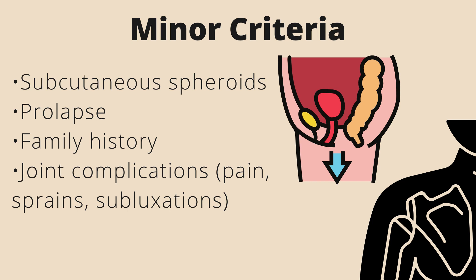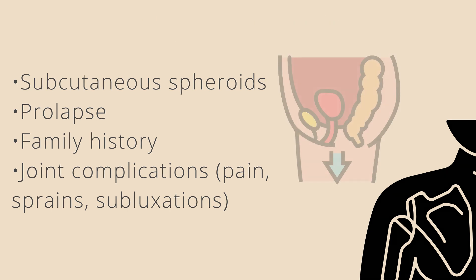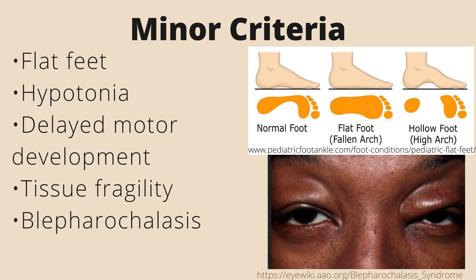Joint complications such as pain, sprains, subluxations, and dislocations are also minor criteria. Further minor criteria include flat feet, also known as pes planus, hypotonia which is decreased muscle tone, delayed motor development, tissue fragility, and blepharochalasis which is chronic swelling of the eyelids.